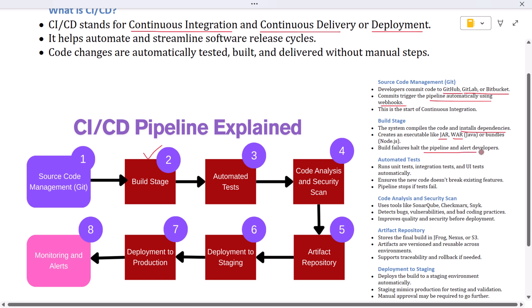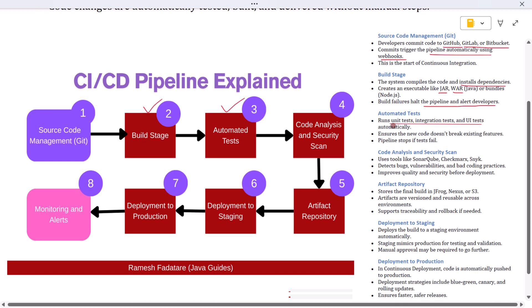If the build fails here, the pipeline stops and notifies the developers. Once the build is successful, the pipeline moves on to automated testing.